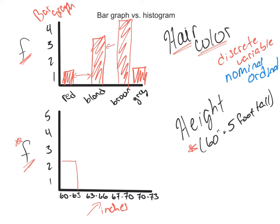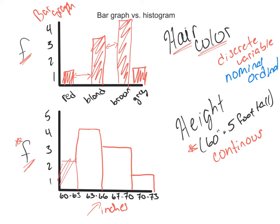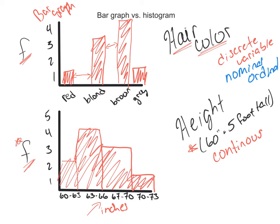With bar graphs, the lines don't touch — you have that gap. But with histograms, with continuous data, you have your bars, your columns touching. So say we have four people that say they're between 63 and 66 inches — I'm going to draw my histogram bar down like that. Then two or three people say they are 67 to 70 inches. And only one person says they're over six foot tall. So when I'm displaying this data, I would color in everything just like that.